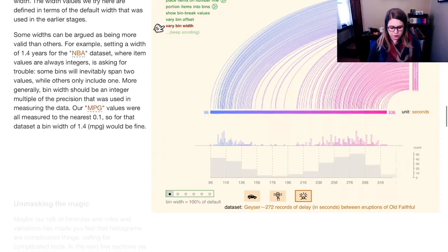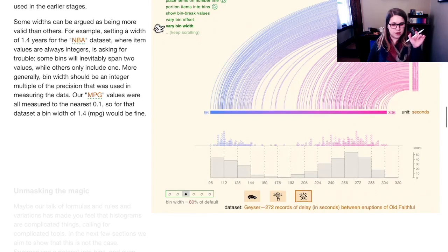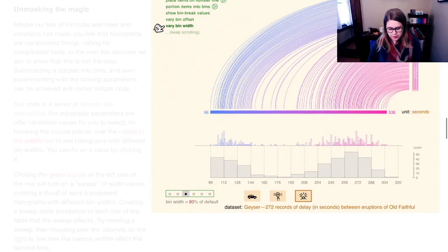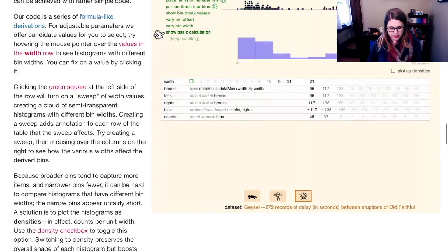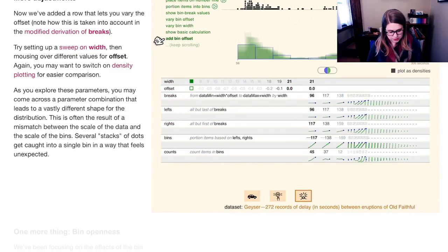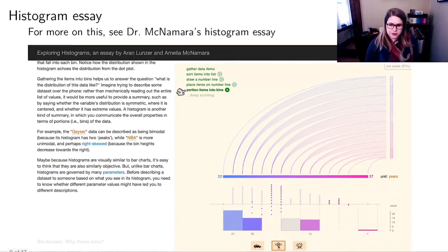We could also vary the bin width. So leave the beginning of the bins the same, but change how wide they are. You can see some different pictures emerging here. And then in this essay we create a playground where you can try lots of things all at once. This one doesn't work as well on the iPad as it does on the desktop. So maybe I'll show it to you when we're in synchronous class time as well. But you could go play around with it if you wanted. So that's histograms. They're kind of deceptively simple, but there's a lot more going on under the hood.